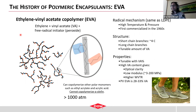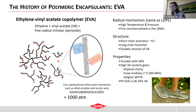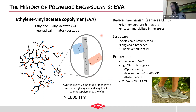Moving on to EVA, a very familiar material to the PV community. This is produced in the same type of process as LDPE — combining ethylene with a free radical initiator — but we're also adding vinyl acetate as an additional co-monomer. We still have the branch-on-branch structure, but now we have both short-chain hydrocarbon branches and branches from the vinyl acetate. This chemistry unfortunately cannot co-polymerize alpha-olefins, but some other polar co-monomers do work, as we'll see with ionomers. EVA was first commercialized in the 60s.